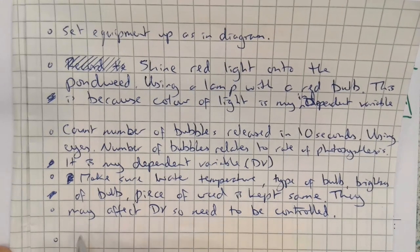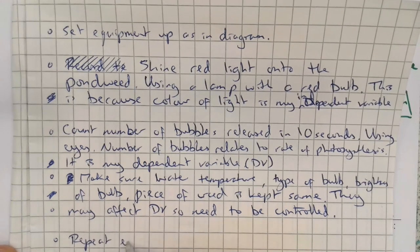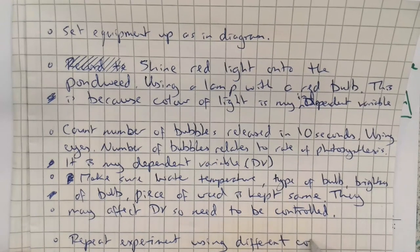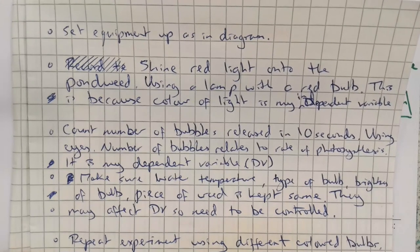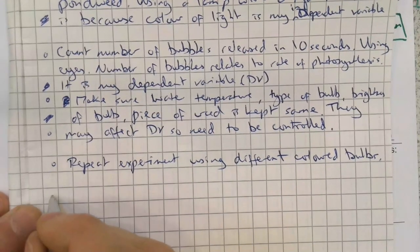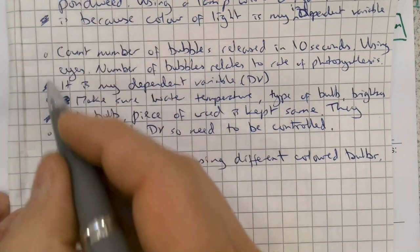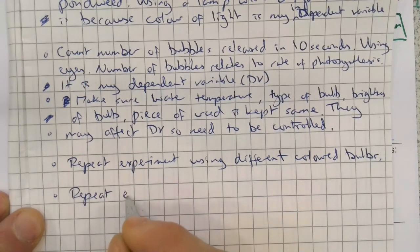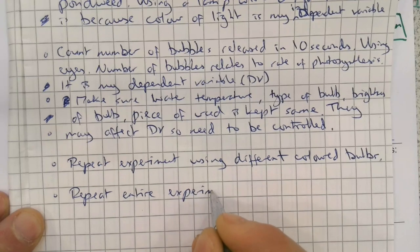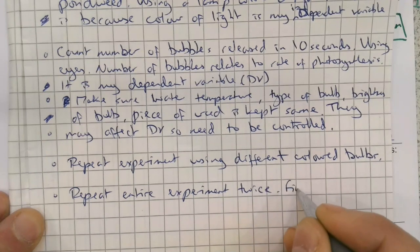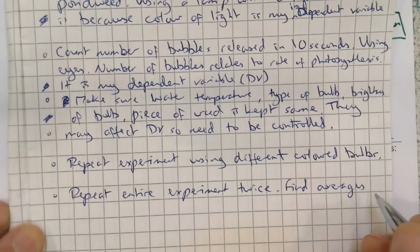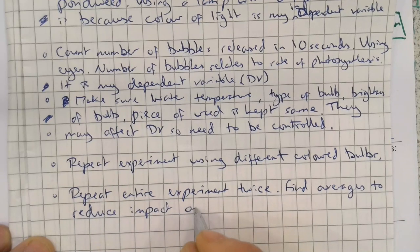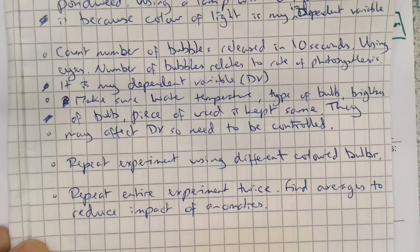What am I going to do then? Well, it's my favourite. I'm just going to repeat. Repeat experiment using different colored bulbs. And I've still got one more bullet left. I could also add as well repeat entire experiment twice, find averages. And why do we do that? To reduce impact of anomalies.